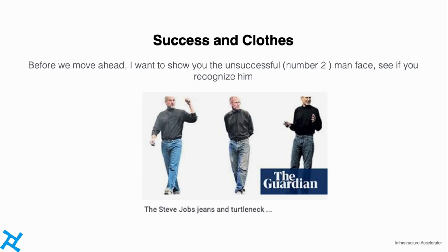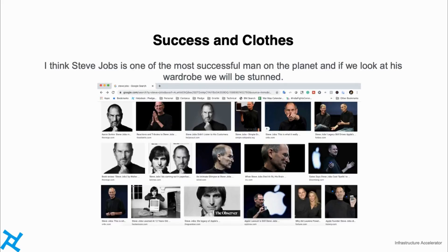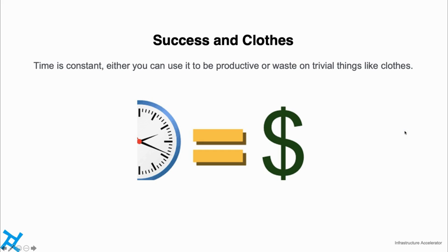Now let me show you the unsuccessful man as per Google. This is Steve Jobs — his turtleneck and his jeans. I think Steve Jobs is one of the most successful men on the planet. If you look at his wardrobe, you will be stunned — the man wore the same clothes his whole life. And here we are, obsessing over designer brands to prove we are wealthy and successful. Apple has numerous times become the most valuable company in the world, yet the founding owner wore nothing else except the same jeans and turtleneck.